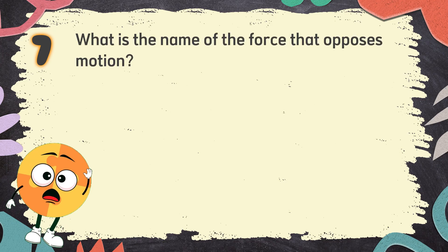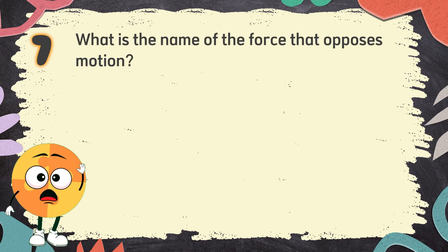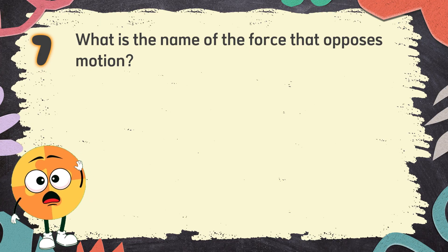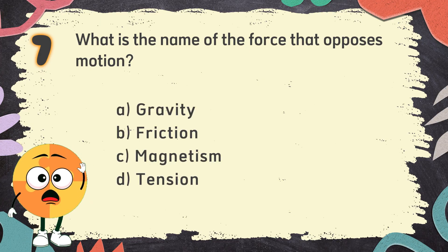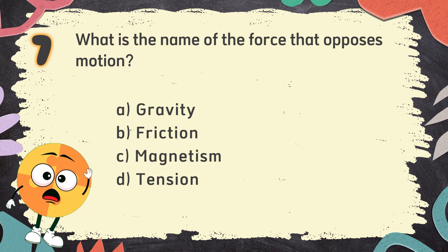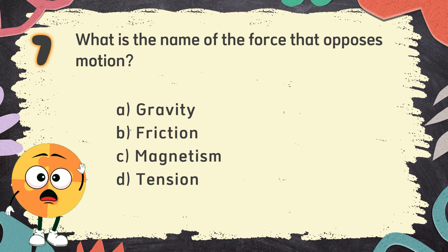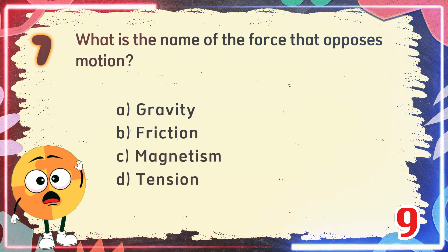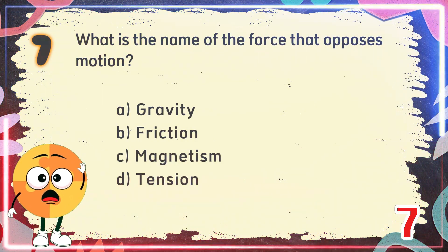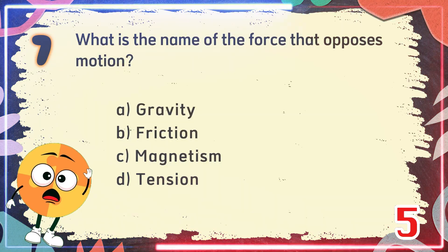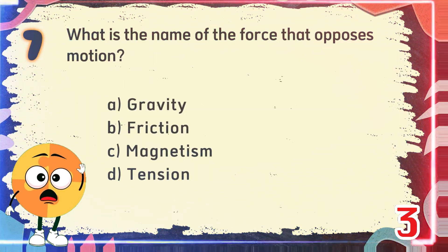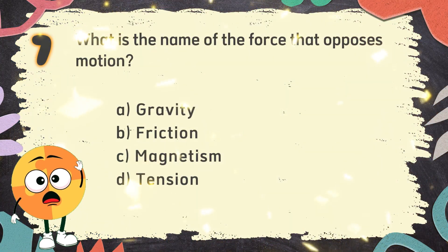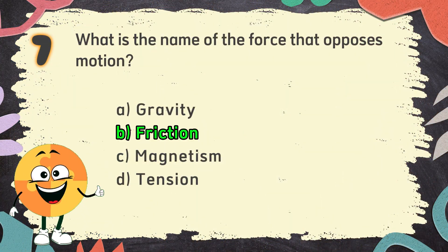Number 7. What is the name of the force that opposes motion? The choices are A. Gravity, B. Friction, C. Magnetism, D. Tension. The correct answer is B. Friction.